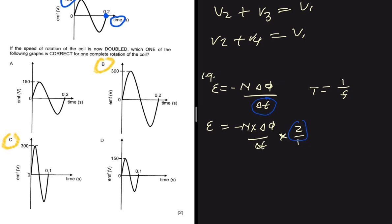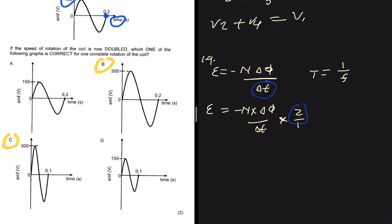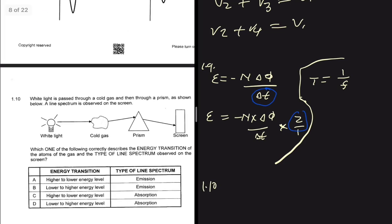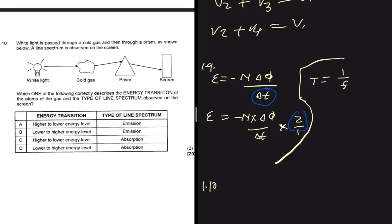Now for the period: T = 1/frequency, so doubling the rotation speed halves the period. Instead of 0.2 seconds we get 0.1 seconds. Combined with the doubled EMF amplitude, the correct graph is option C. So the answer for 1.9 is C. Finally, question 1.10 asks about white light passed through a cold gas and then a prism, producing a line spectrum – which option correctly describes the energy transition and spectrum type. Leave your answer in the comments and the first correct answer will be pinned.